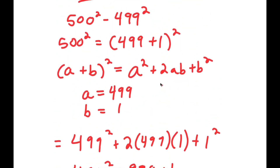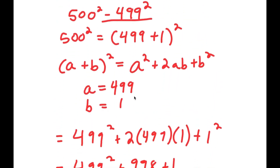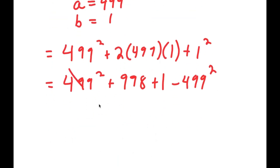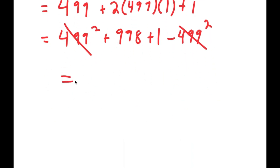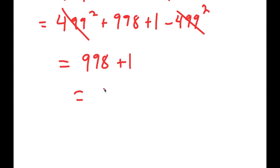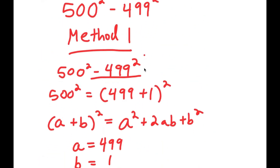This is equal to 499 squared plus 998 plus 1. Remember at the end we have minus 499 squared, so adding that back in, 499 squared minus 499 squared cancels out, leaving 998 plus 1, which equals 999. That is the first method.